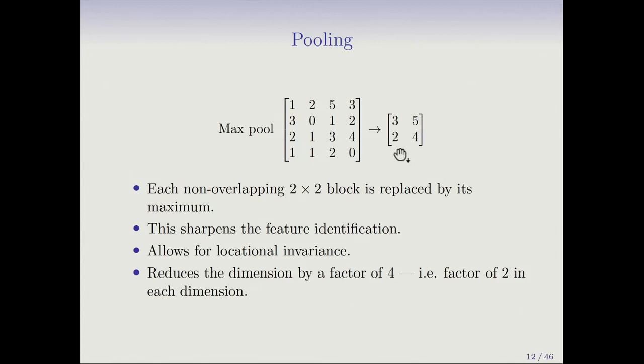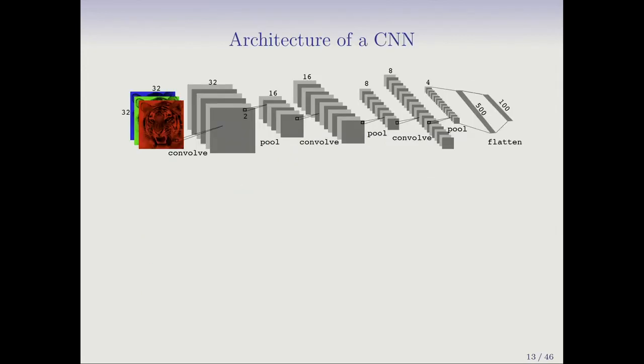So you get a reduced image. This sharpens the feature identification. If we thought of the convolution as highlighting areas where we saw a feature, by doing this pooling, we sharpen things, and we allow a little bit of location invariance to where that feature is by picking the place where it's maximum. It also reduces the dimension by a factor of four, in this case a factor of two in each dimension.